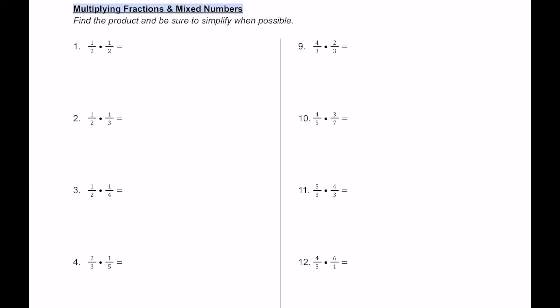For number 1, we have 1 half times 1 half. When multiplying fractions, we just write one fraction bar, then multiply the numerators together — 1 times 1 — and the denominators together — 2 times 2. On top, 1 times 1 is 1, and on the bottom, 2 times 2 is 4. For number 2, we have 1 half times 1 third, so on top we have 1 times 1, and on bottom 2 times 3, giving us 1 sixth.